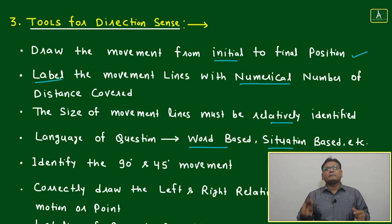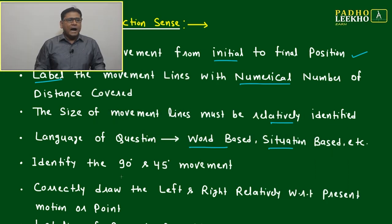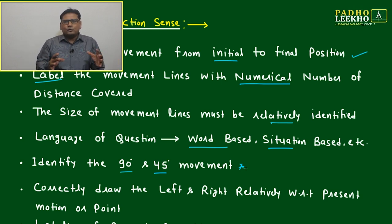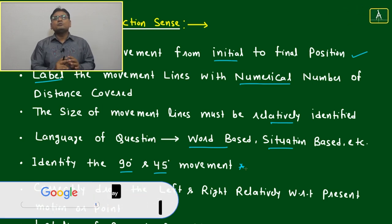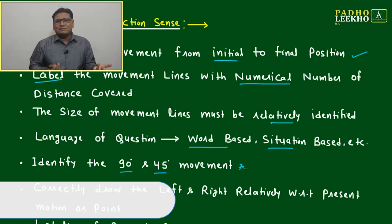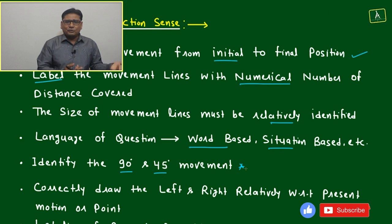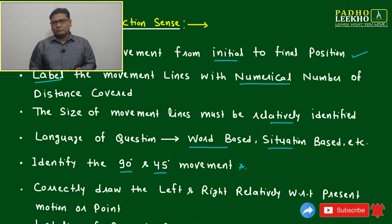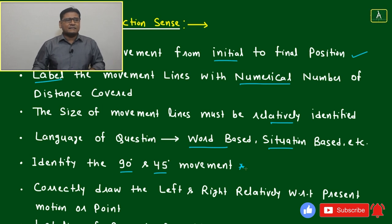Identify the 90 degree and 45 degree movement. This is one of the critical areas where many students will do silly mistakes. Because here, the scope to do big mistakes is not there - you will do silly mistakes like taking one measurement in place of another. But of course, after doing this silly mistake, you must land up with a wrong answer.